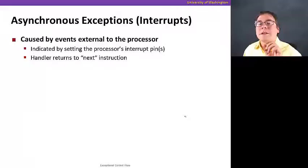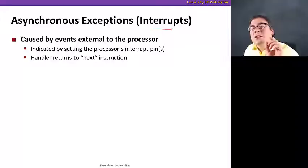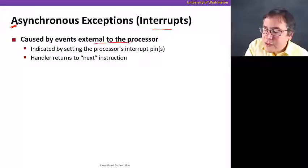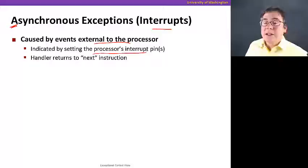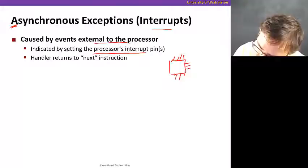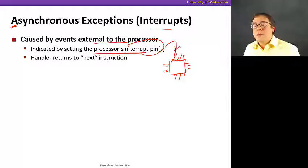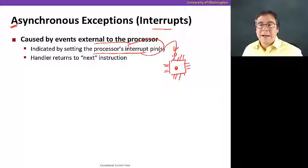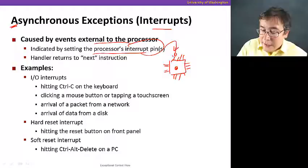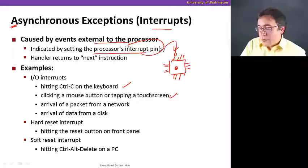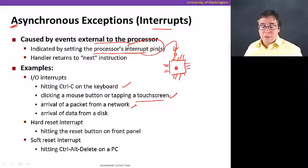There are two types of exceptions. The first type is asynchronous exceptions, also known as interrupts. They're called asynchronous because they are caused by events external to the processor, and they're indicated by setting the processor's interrupt pins. Whenever a signal is put on an interrupt pin, an exception is raised and the processor jumps to the piece of code responsible for dealing with that interrupt. Examples include a timer expiring, a mouse click, hitting Control-C on the keyboard, touching the touch screen, or a packet arriving from the network.